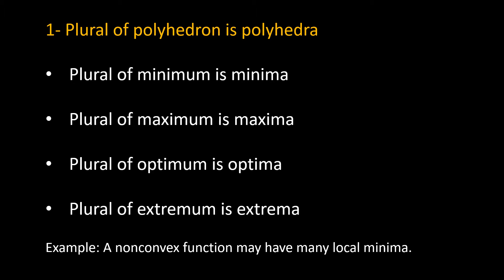First, the plural form of polyhedron is polyhedra. This plural form happens frequently in literature of optimization where we have minima as the plural form of minimum, maxima as the plural form of maximum, optima as the plural form of optimum which means the desired point. Also we have extrema as the plural form of extremum. As an example, one can say a non-convex function may have many local minima.